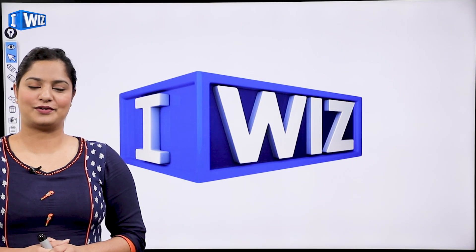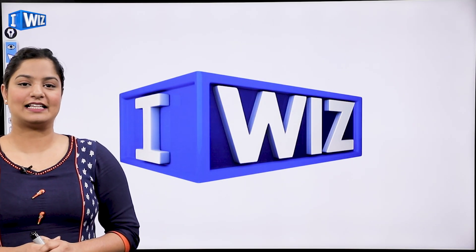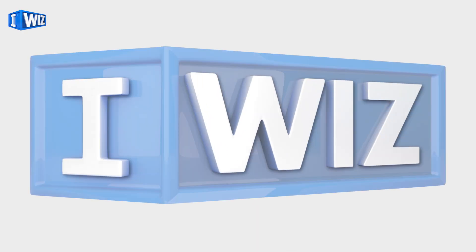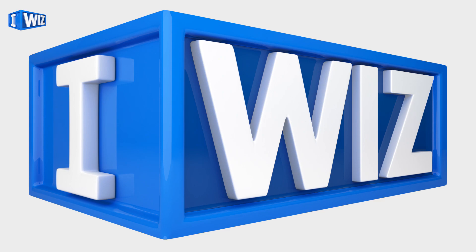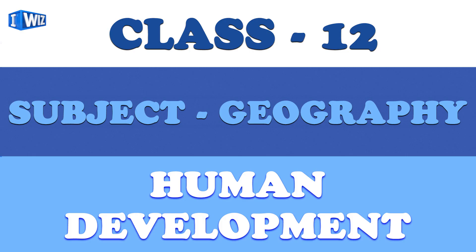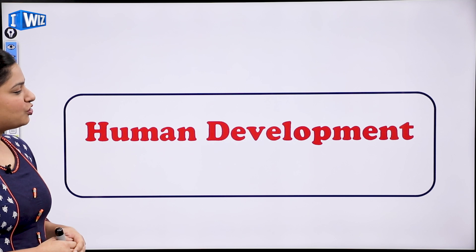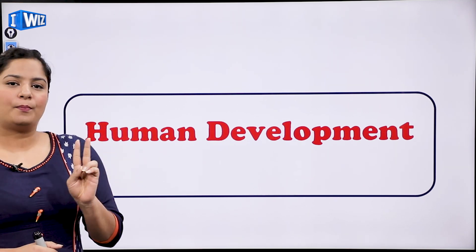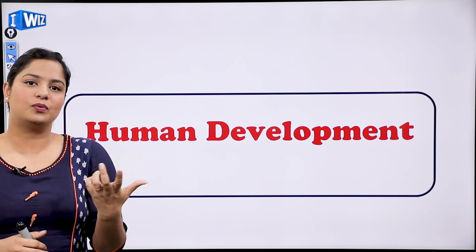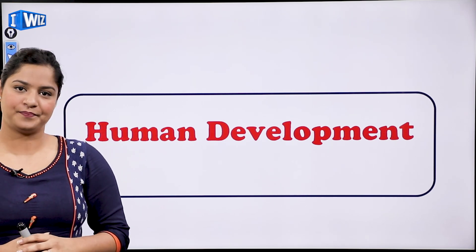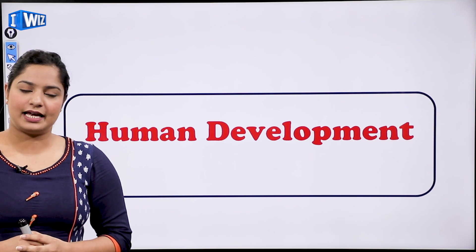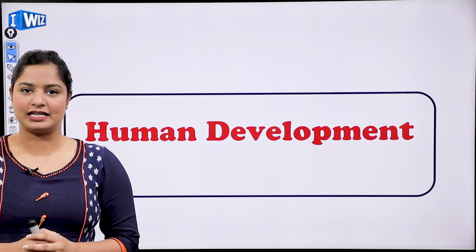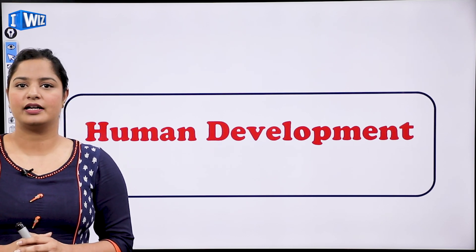Hello friends, my name is Rupinder Kaul and today we will study Class 12th Geography and the topic is Human Development. Human development is a concept given by two very intelligent and hardworking economists — Amartya Sen and Mahbub ul Haq. Amartya Sen is an Indian economist and Dr. Mahbub ul Haq was from Pakistan.